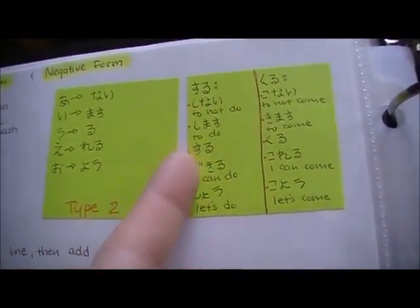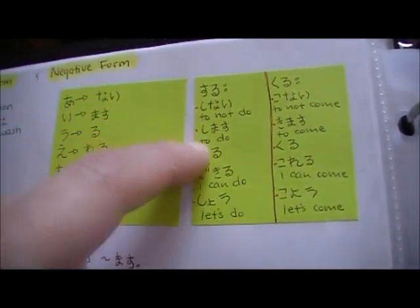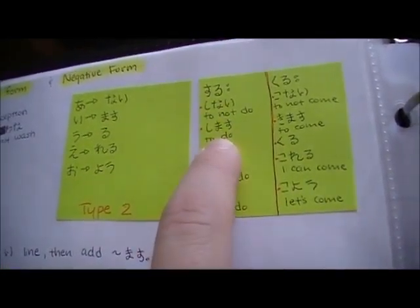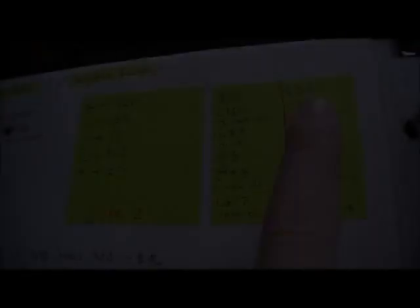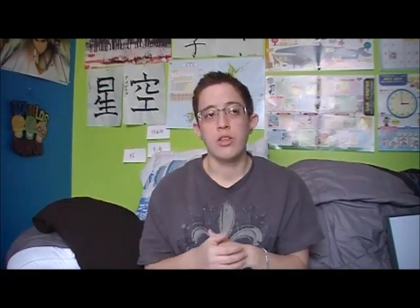Then we have our irregulars in group three. Suru becomes shimasu, kuru becomes kimasu — you just have to memorize those. The masu form, or even the stem of the masu form, which is the conjugation right before you add masu, you'll use that in a lot of sentence-ending patterns and other conjugations. So it's always good to know how to do masu form. It's probably the very first conjugation any textbook will teach you.